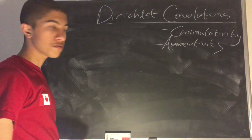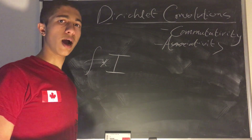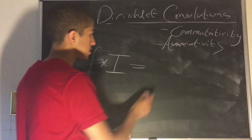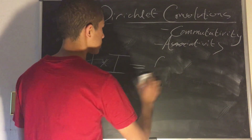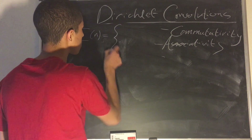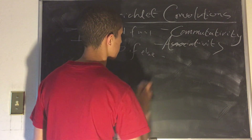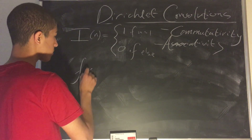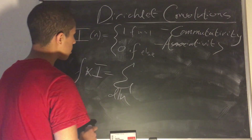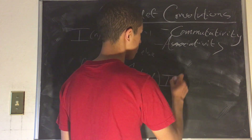Another property we have is the identity property: f star the identity function i equals f. Let's recall how i was defined: i of n equals 1 if n equals 1, and 0 otherwise. Let's verify that f convoluted with i gives us the sum over d divides n of f of d times i of n over d.